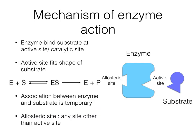For enzymes to work, they have to bind to the substrate. The part of the enzyme that binds to the substrate is called the active site or the catalytic site, and it should fit the shape of the substrate. The association between the enzyme and the substrate is only temporary, which means once the substrate is turned into a product, the product is released right away so that the enzyme can bind to another new substrate. There are of course other sites on the enzyme — we call them the allosteric sites, defined as any site other than the active site.